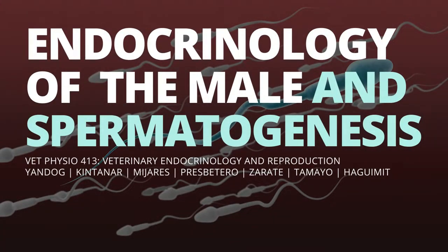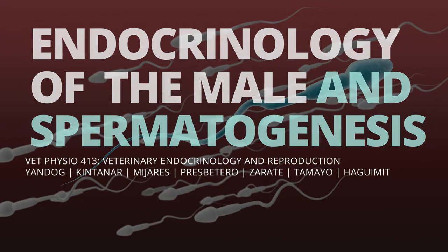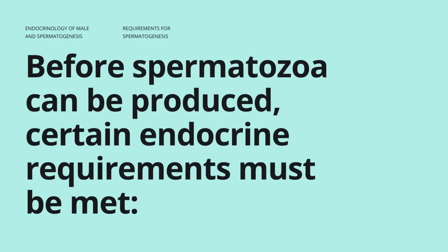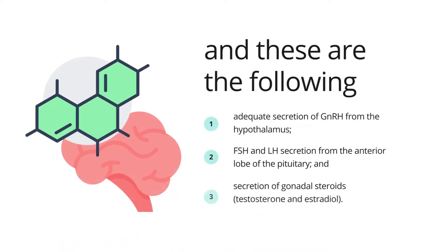Endocrinology of the Male and Spermatogenesis. Before spermatozoa can be produced, certain endocrine requirements must be met: adequate secretion of GnRH from the hypothalamus, FSH and LH secretion from the anterior lobe of the pituitary, and secretion of gonadal steroids — testosterone and estradiol.